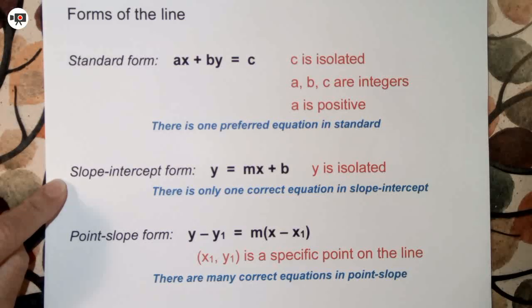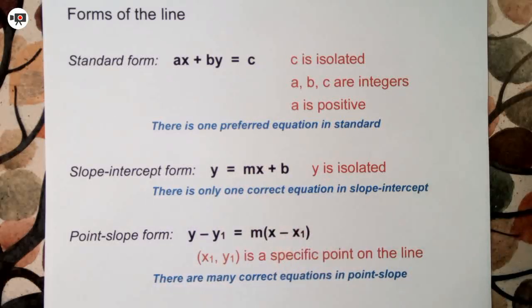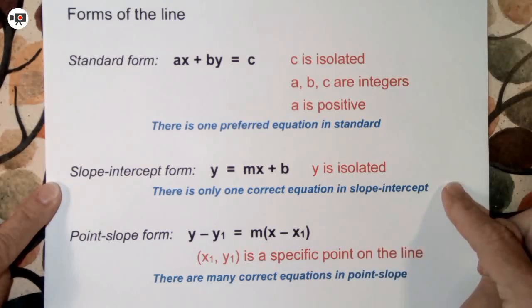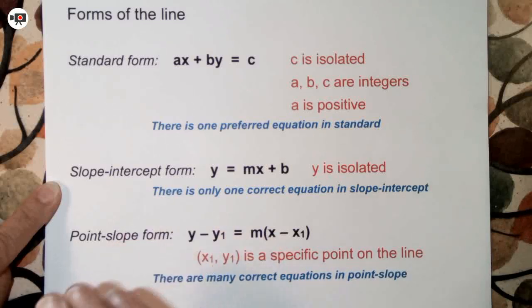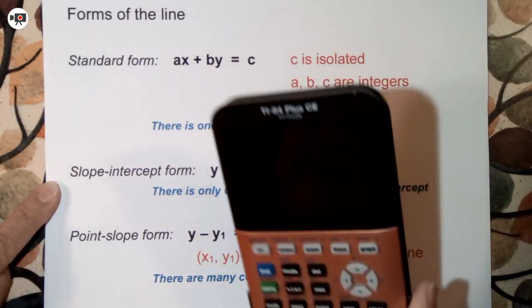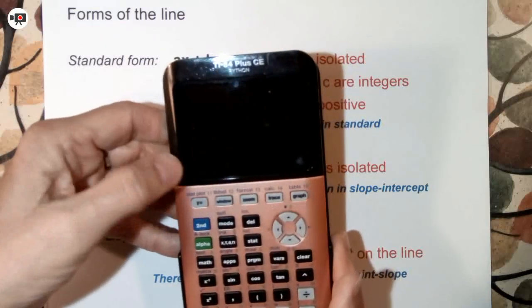However, since graphing calculators use almost exclusively functions, this is the function form where the dependent variable Y is isolated. So Y is isolated. That's how you recognize that it's slope intercept form which is also function form. A convenient thing also about slope intercept form is there's only one correct way to write it. Y must be isolated and all other like terms must be combined and simplified. So Y must be completely isolated. It can't be negative. So slope intercept form characteristic of seeing it is seeing that the Y is isolated. And it's really handy because it's the one that the calculator uses, it even has the button for the Y equals.